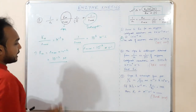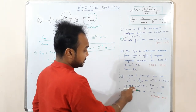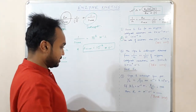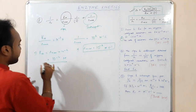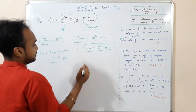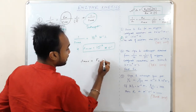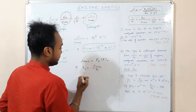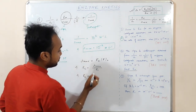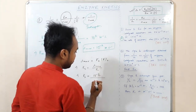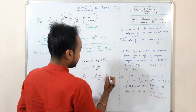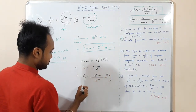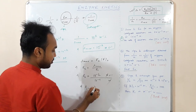We are not asked to calculate Km here. Instead, given that enzyme concentration E₀ is 10⁻⁶ mol and K₋₁/K₂ = 1000, we need to find K₁. Since Rmax = K₂·E₀, we get K₂ = Rmax/E₀ = 10⁻² / 10⁻⁶ = 10⁴ s⁻¹.